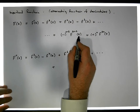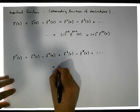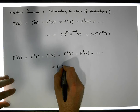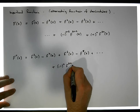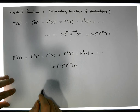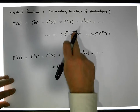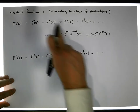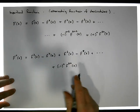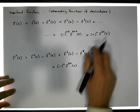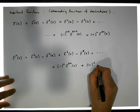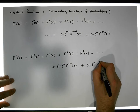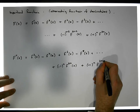So it's going to be minus one to the n times f of the 2n-th derivative of x. When I add two onto the powers each time, this is going to get differentiated so it's going to be plus minus one to the n times f of the (2n+2)-th derivative of x.